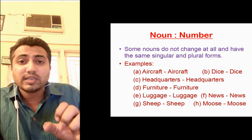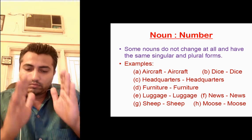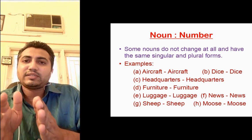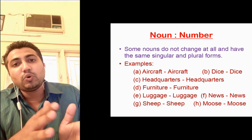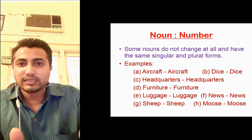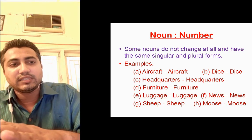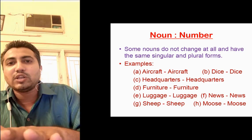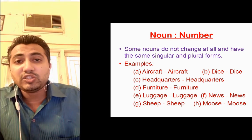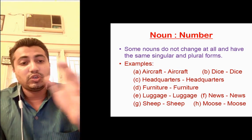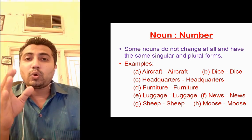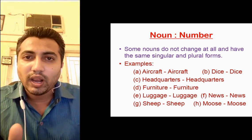The next rule says there are some nouns which remain the same in both singular and plural form. For example: aircraft (singular) is also aircraft (plural). Dice is also dice. Headquarters, furniture, luggage, news, sheep, moose — all these nouns are the same in singular and plural.